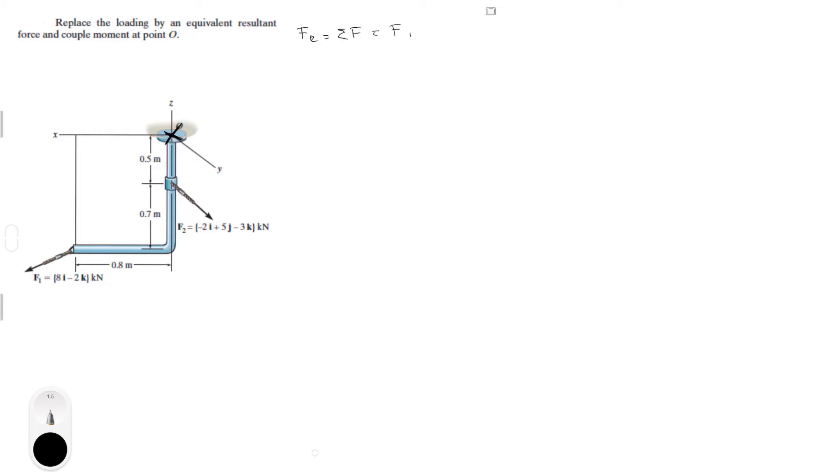We got two forces, which is F1 plus F2. F1 is equal to 8i plus 0j minus 2k, and this is all in kilonewtons. F2 is equal to minus 2i plus 5j minus 3k, also in kilonewtons.